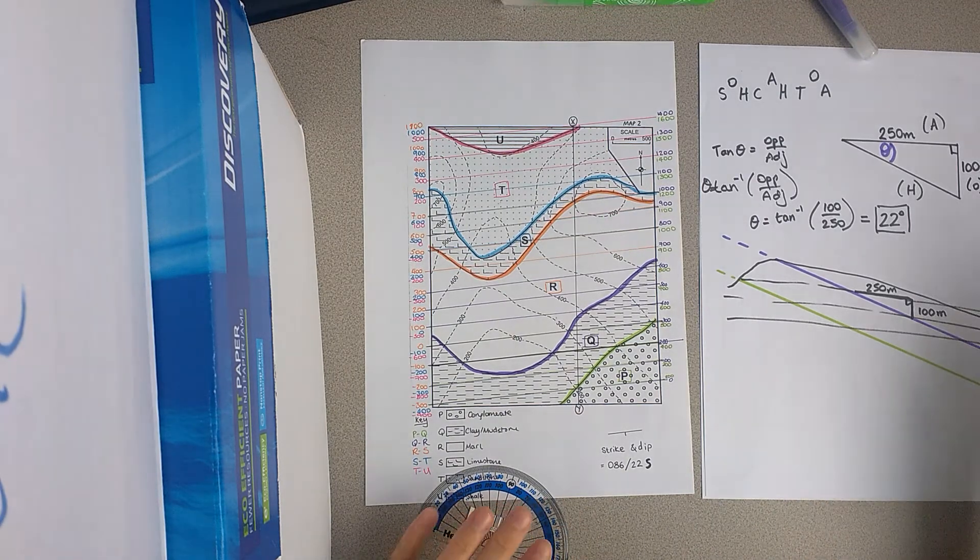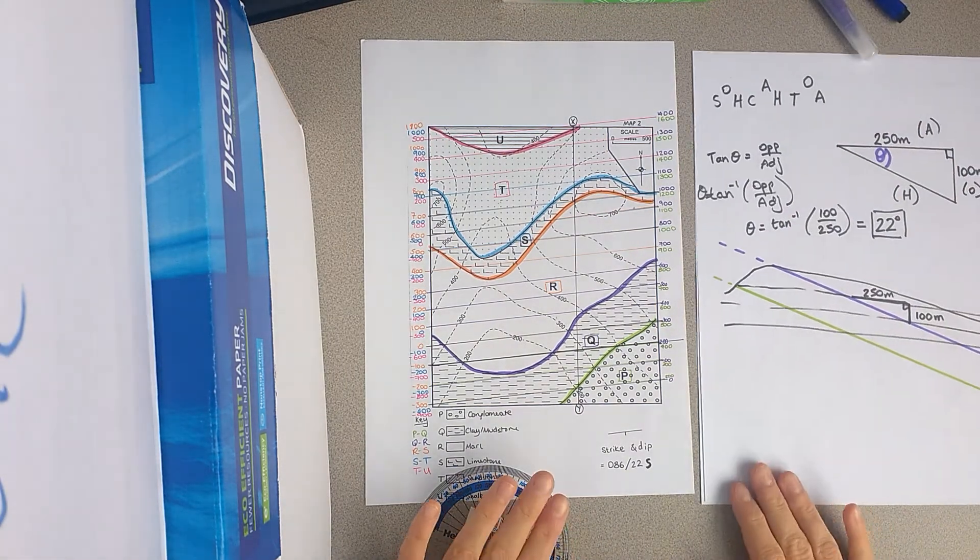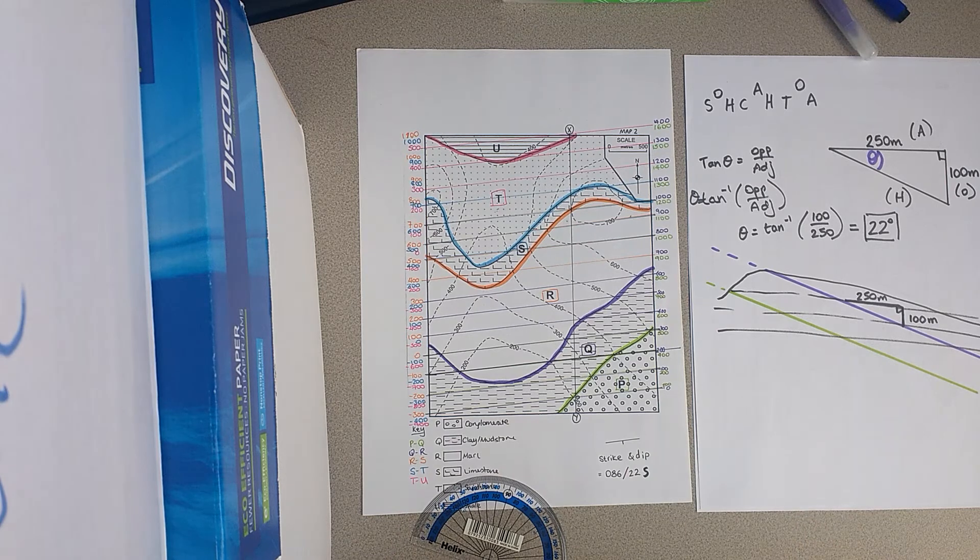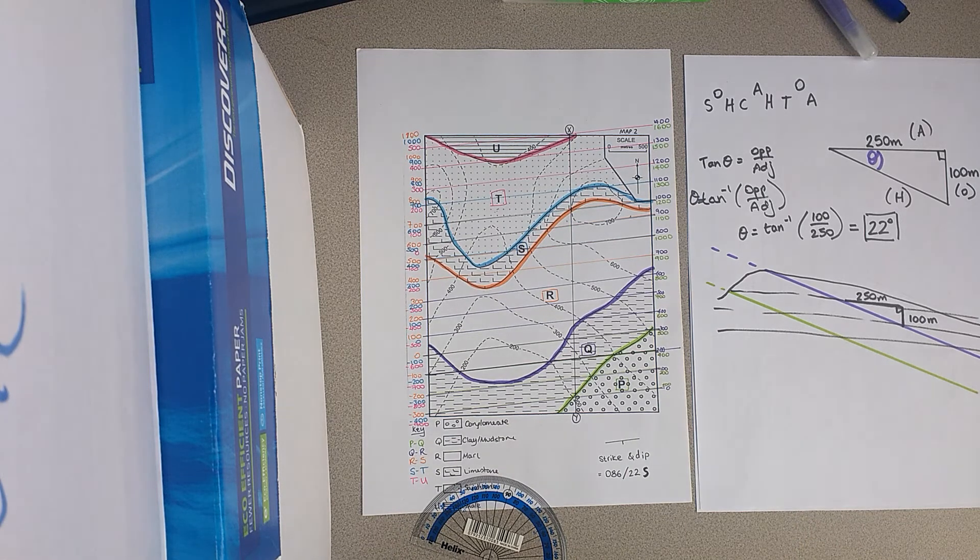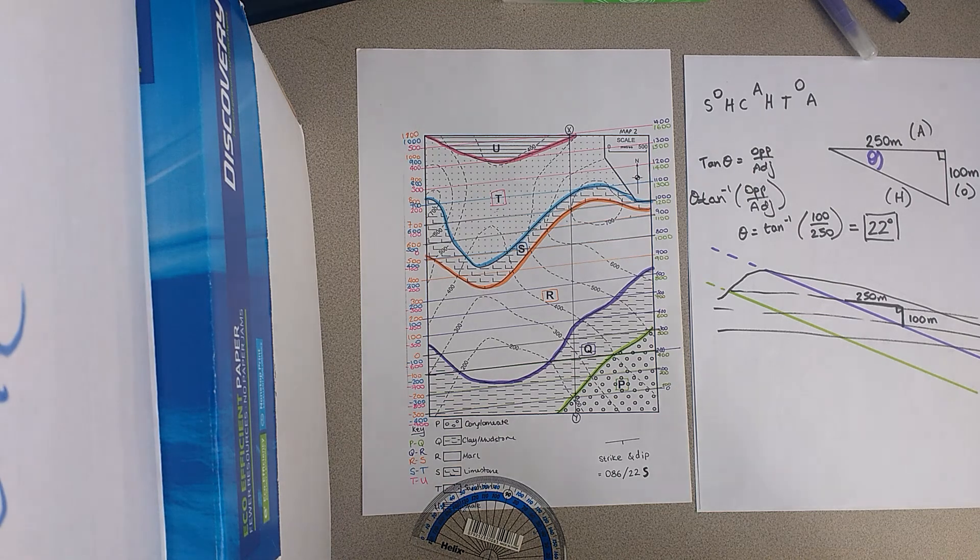Okay? So, if you try your map number two now, you should be able to get this strike and dip of 86 degrees is the strike, and then dipping 22 degrees to the south.